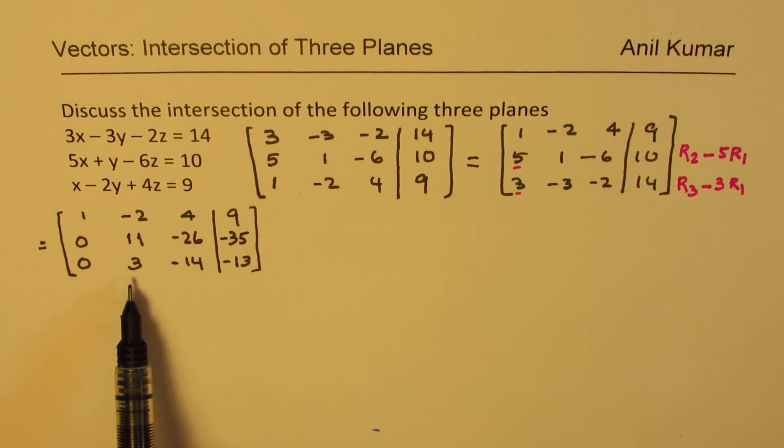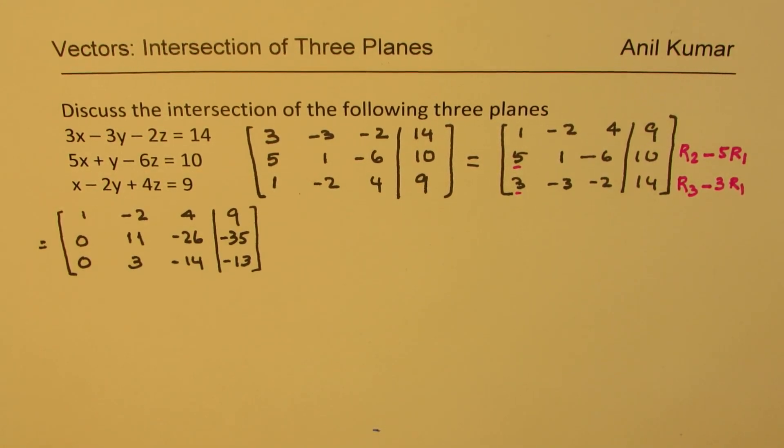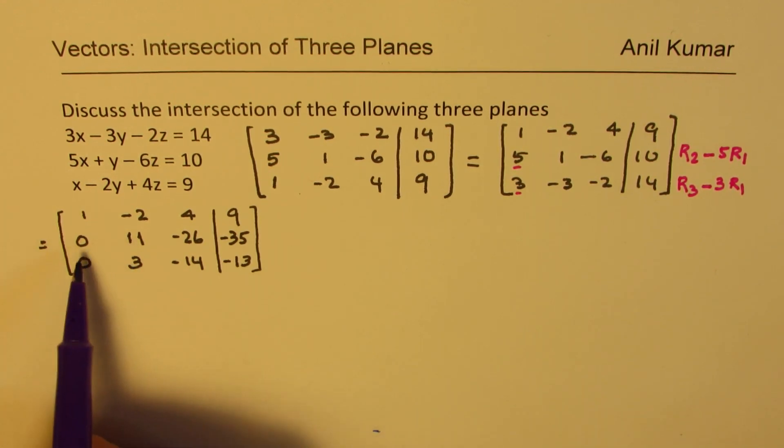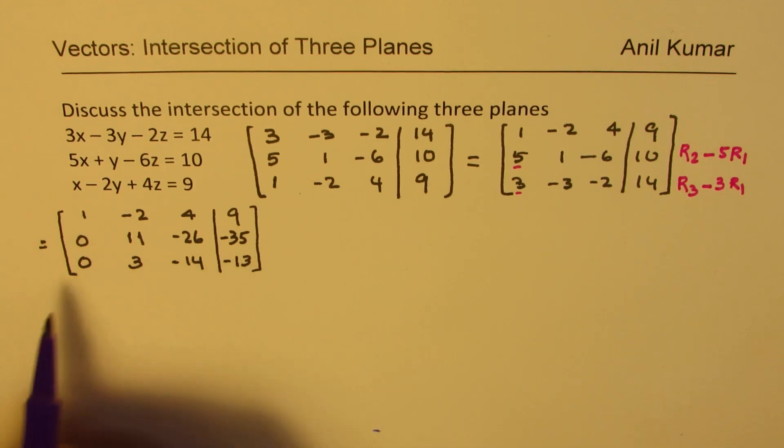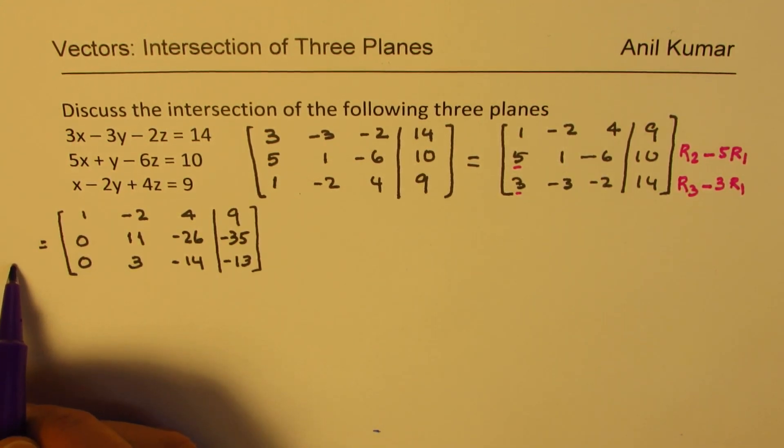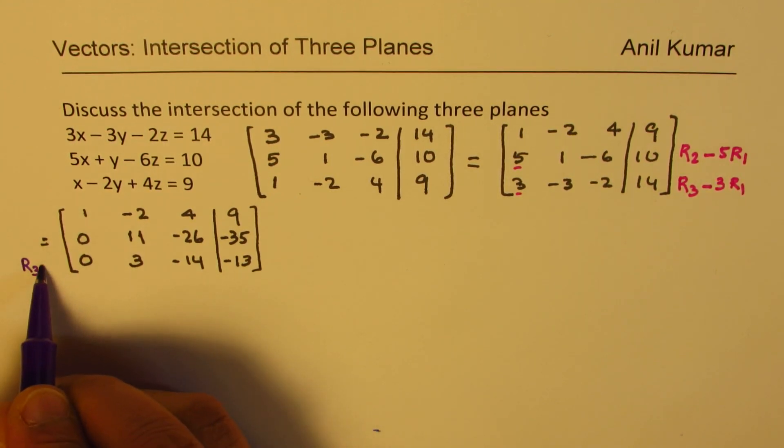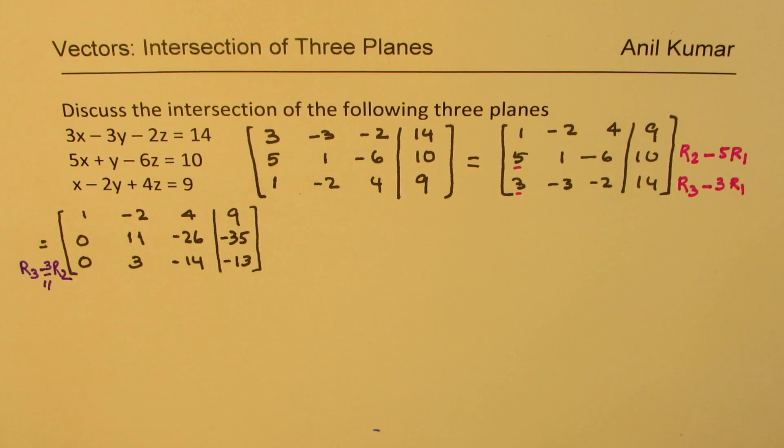To get a 0 here, it is slightly complicated. So what are we going to do? The way to get 0 here is we have to use second row. We are going to, from R3, take away 3 over 11 times R2. So 3 over 11 times R2 will actually give us 0 in this position.